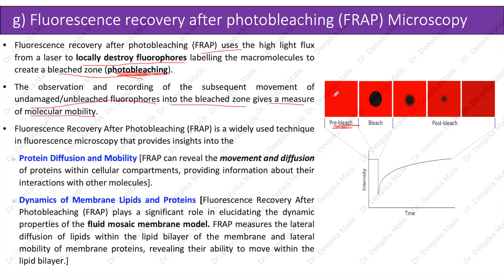After photobleaching, there is a decrease in fluorescence intensity. Over time, there is a regain in fluorescence intensity, showing movement of unbleached fluorophores into the bleached zone — which gives a measure of molecular mobility. FRAP is a widely used technique in fluorescence microscopy that provides insight into protein diffusion and mobility.